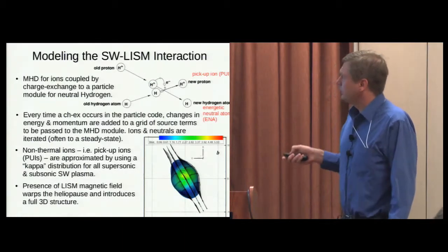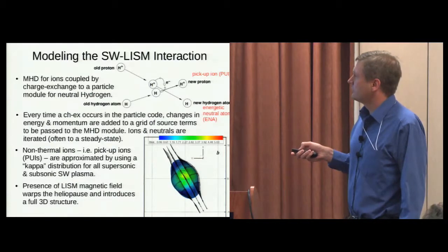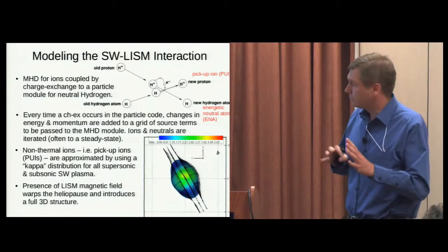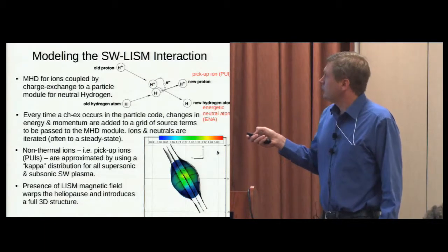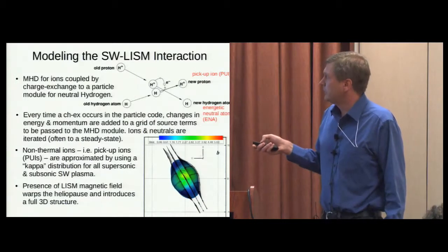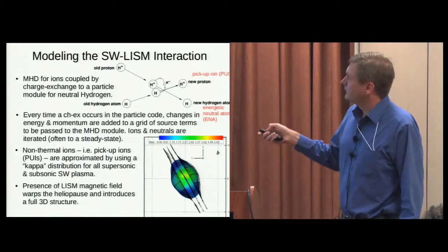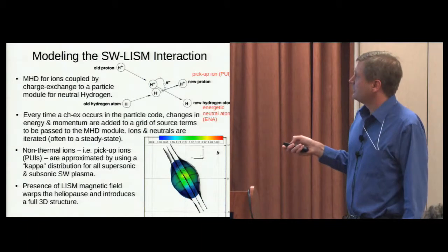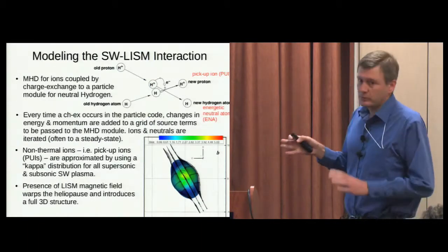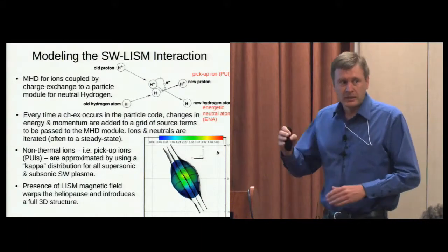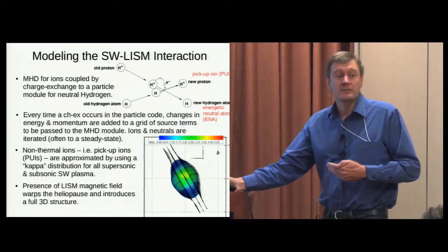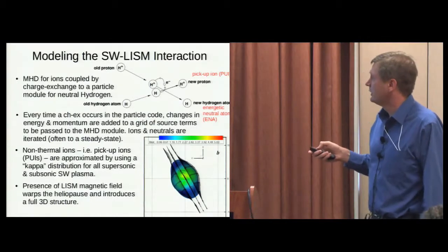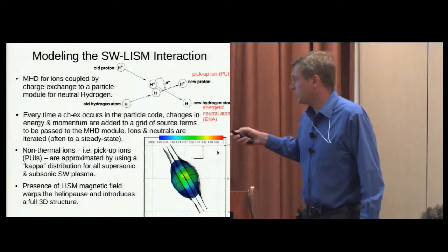In the code, every time a charge exchange occurs to a particle, we're following these hydrogen atoms as individual particles. We know how to handle the collision, so we end up with a new hydrogen atom. To take care of the plasma side, we have source terms — we figure out the change in energy and momentum of the hydrogen atom and say that change must be reflected in what the plasma feels. So we have source terms on the MHD equations.